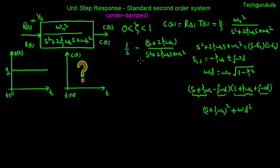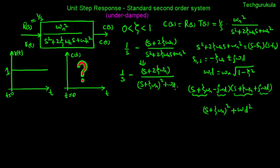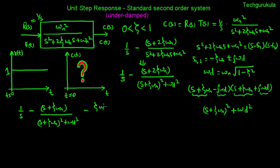Substituting that back, the expression can be rewritten as 1 over s, minus s plus zeta omega n over s plus zeta omega n whole squared plus omega d squared, minus zeta omega n over s plus zeta omega n whole squared plus omega d squared. We rewrite it in this form because it now resembles standard inverse Laplace functions. All we need to do to find C of t is take the inverse Laplace of this C of s.